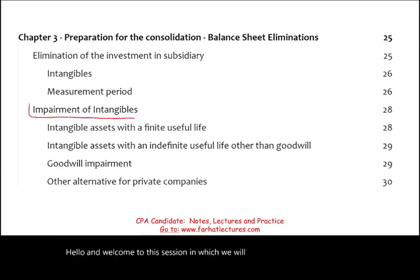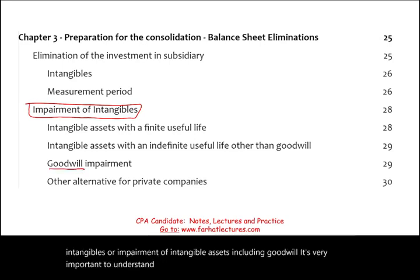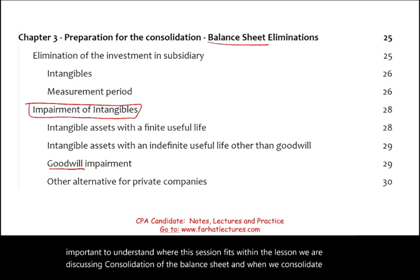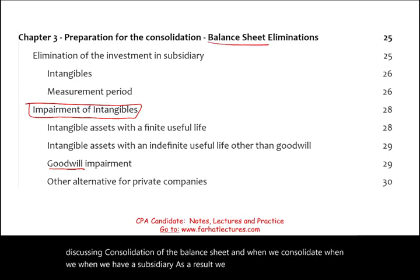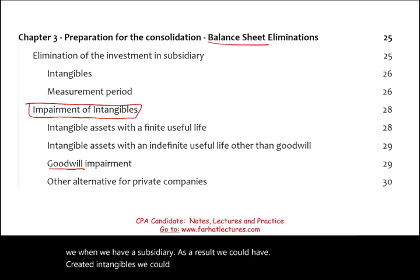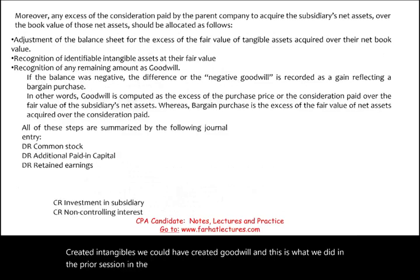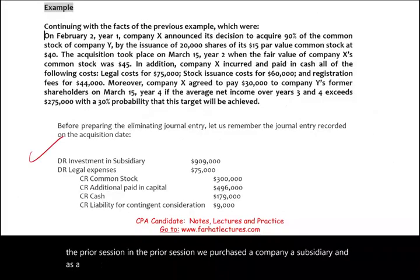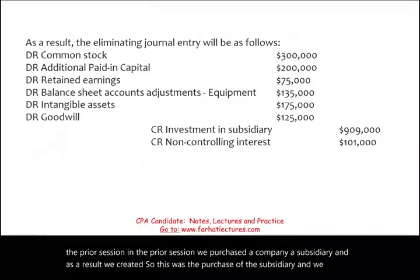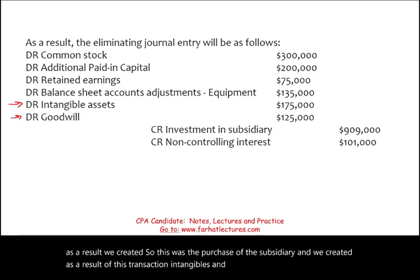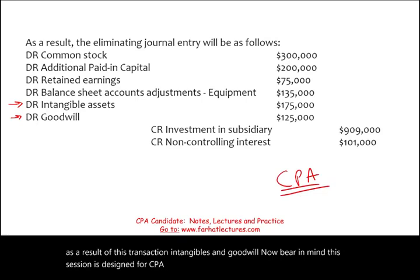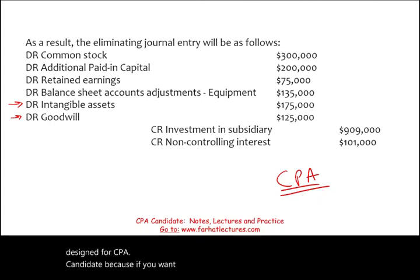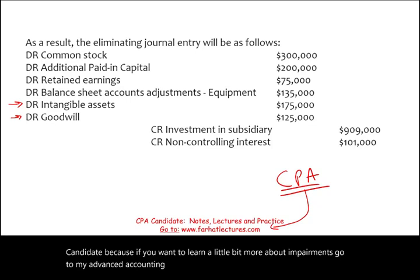Welcome to this session in which we will discuss impairment of intangible assets, including goodwill. It's very important to understand where this session fits within the lesson. We are discussing consolidation of the balance sheet. When we consolidate and have a subsidiary, we could have created intangibles and goodwill — which is what we did in the prior session. This session is designed for CPA candidates. For more in-depth coverage, see the advanced accounting course.